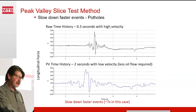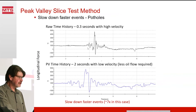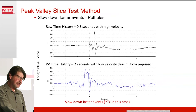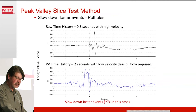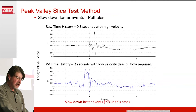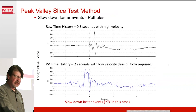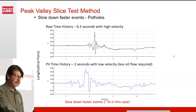In this case we've got a pothole strike — a third of a second, 0.3 seconds for the entire event — with very high velocity, acceleration, and oil flow demand. By stretching that one-third of a second event out to two seconds, about one-seventh as fast, we can play it back at very low velocity. Much less oil flow is required, and all the displacements and forces are still achieved.